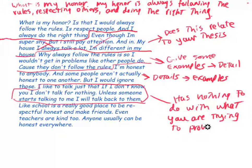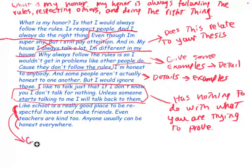So I would say that your topic sentence lacks focus. You're not focused on your topic sentence. Like, 'School is really a good place to be respectful and honest and make friends' — well, that's true, but even teachers are kind. That's fine, but anyone can be honest anywhere. These are general statements, but you're not giving specific details.